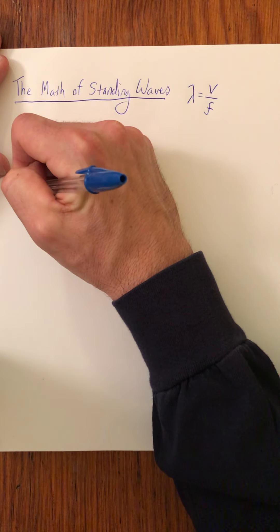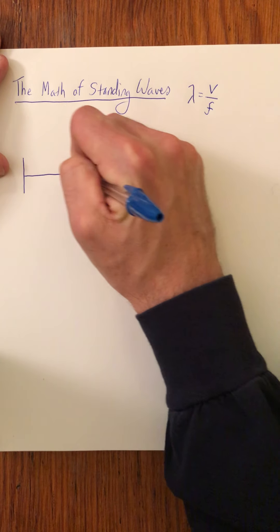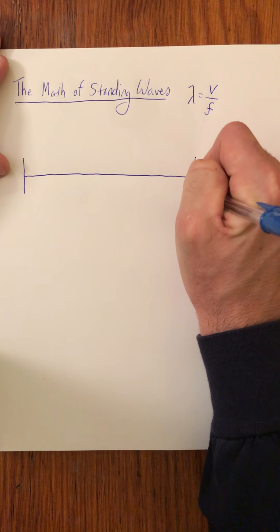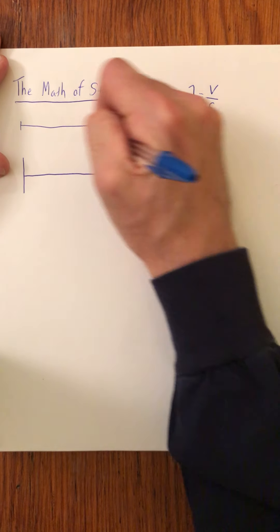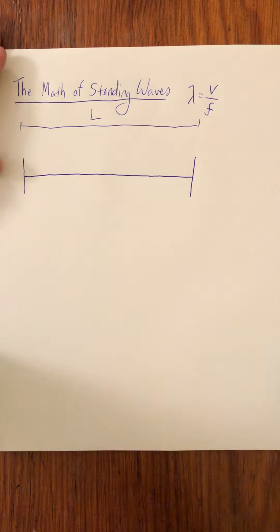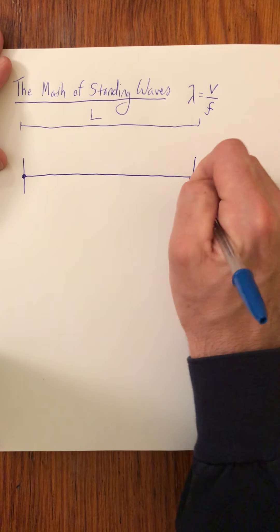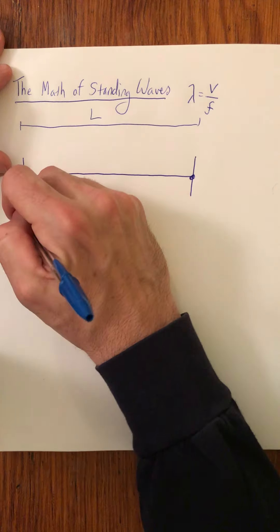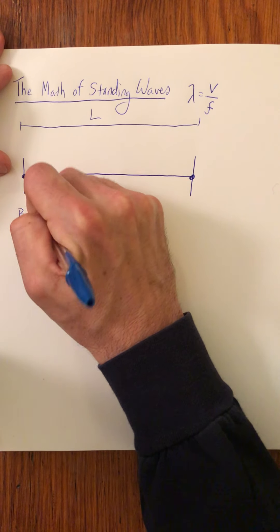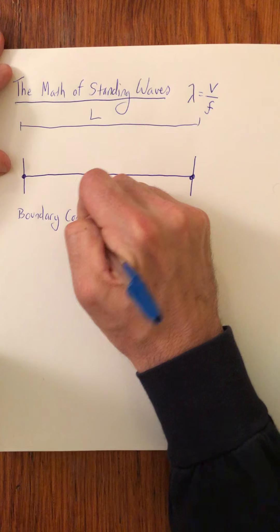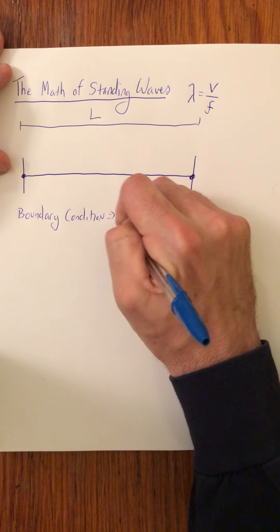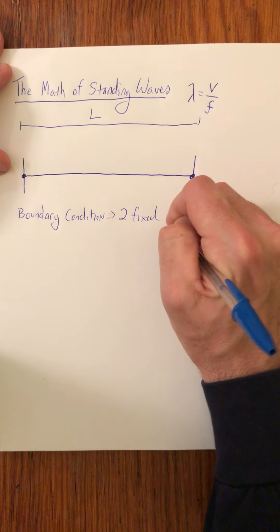Here we go. Just for sake of argument, to make it nice and simple, let's say we have a string of length L. This string is fixed at two locations. So the boundary condition here, that's super important as we'll see later, is two fixed ends.